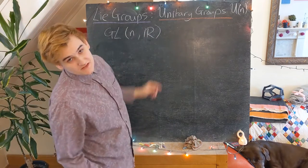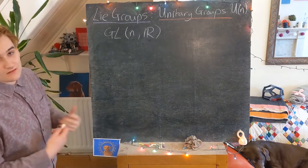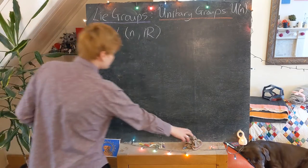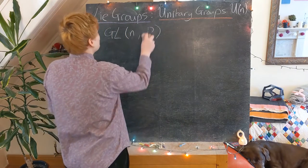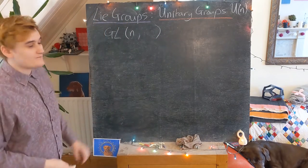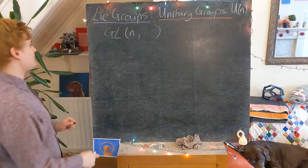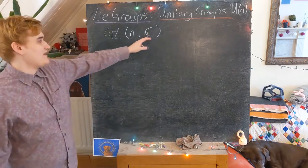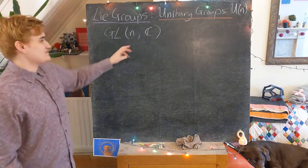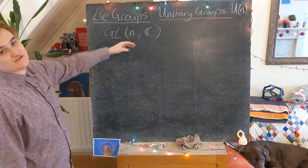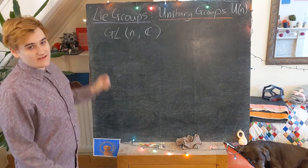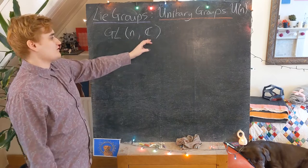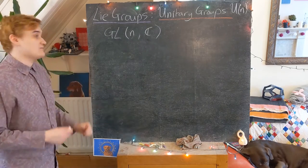These unitary groups are not going to have real elements — they're going to have complex elements instead. So rather than working with GL(n,R), we work with its complex counterpart GL(n,C), which is the n by n matrices that are invertible, i.e. they have non-zero determinants, and these are matrices with complex elements.